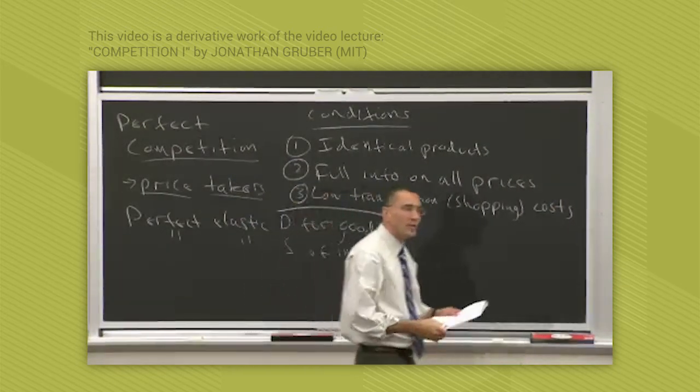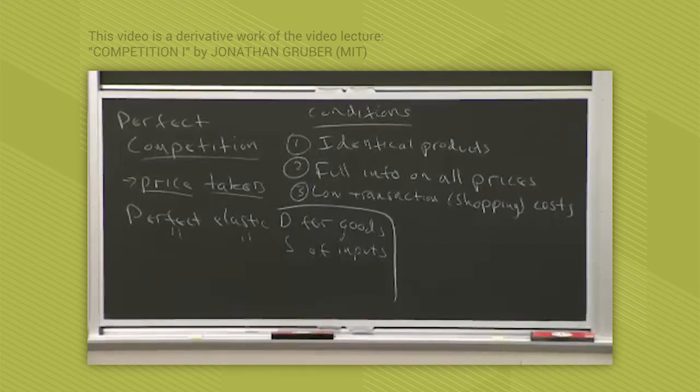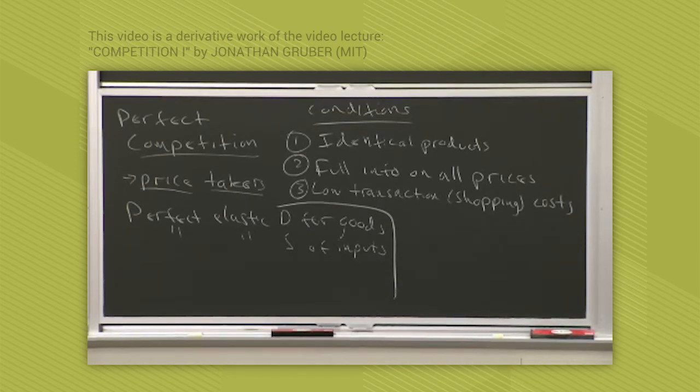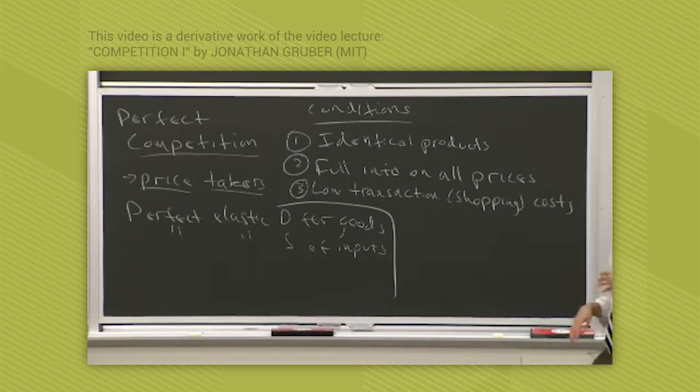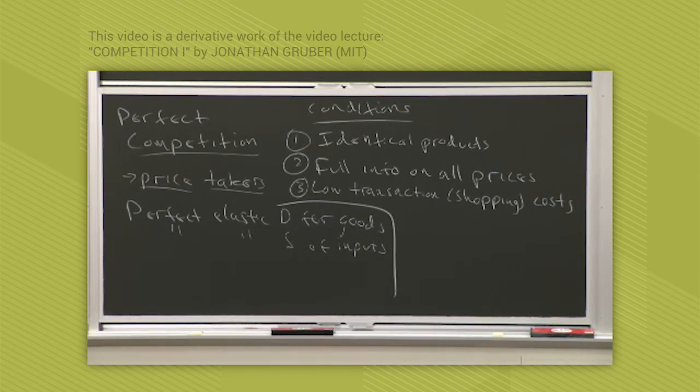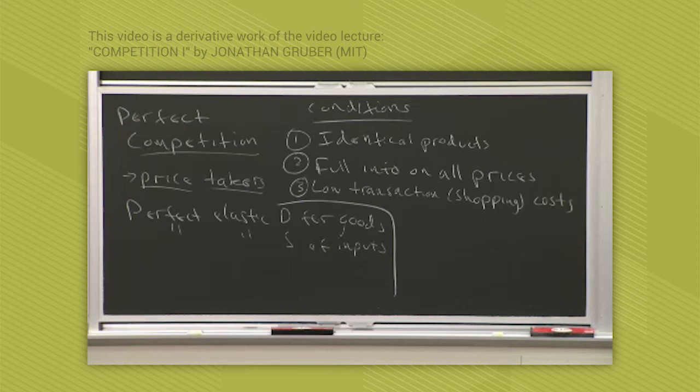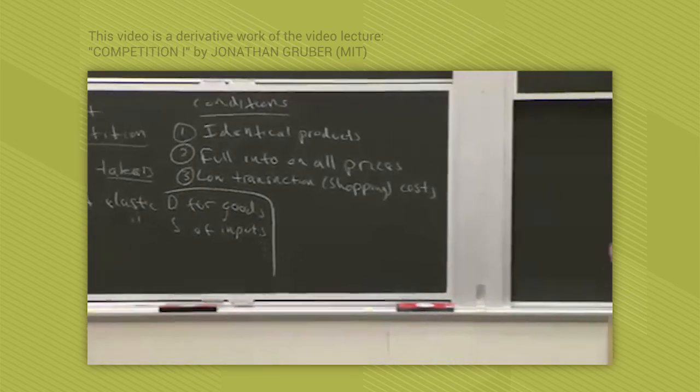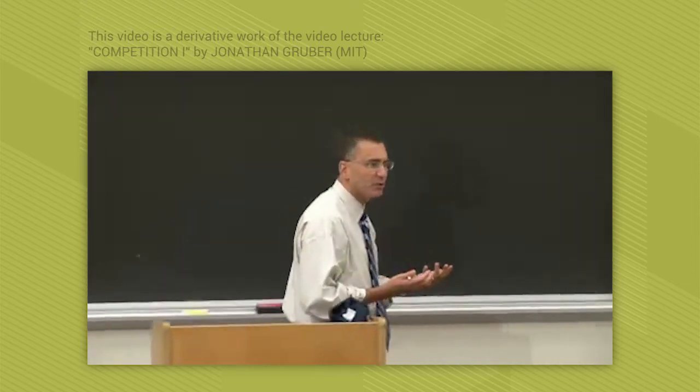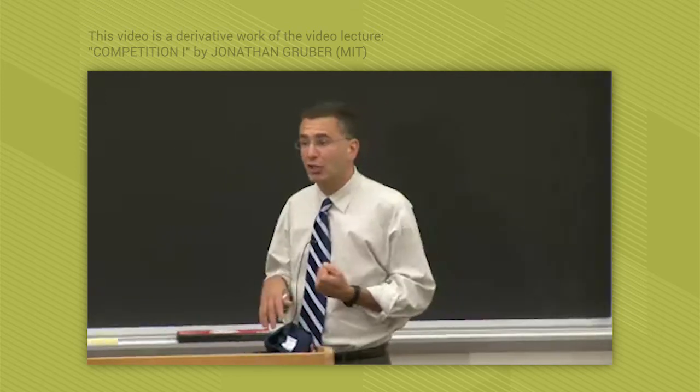These two are critical because the way perfect competition is going to work is consumers are going to shop across firms selling identical goods and they're going to buy from the cheapest one. And if there's any failure of either of these, then consumers might not know if you're the cheapest and therefore you might be able to charge extra. So perfectly elastic demand is going to require that consumers know all the prices and can costlessly shop across all the options. Otherwise firms might have some opportunity to charge different prices.